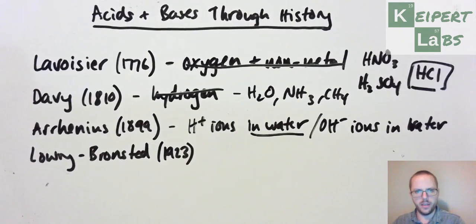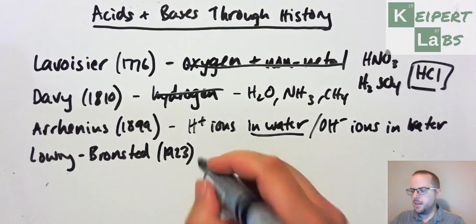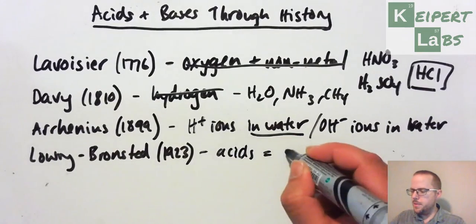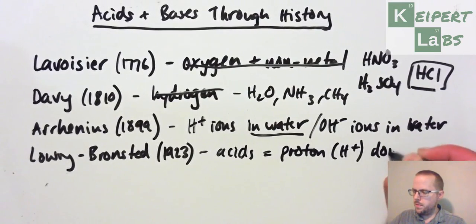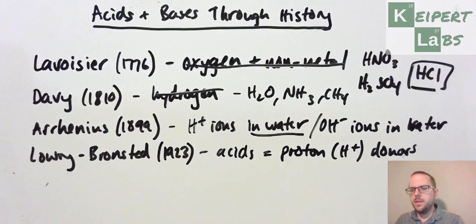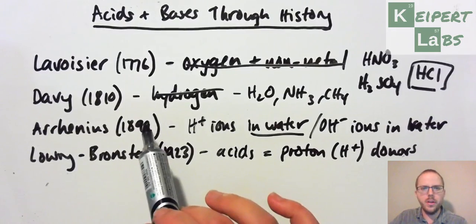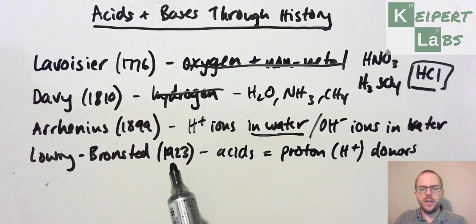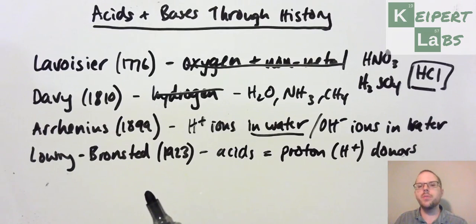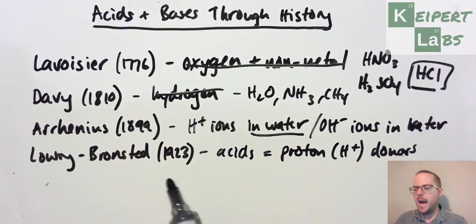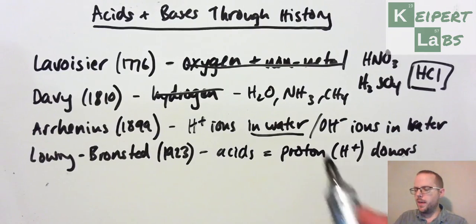Until then, Lowry and Bronsted, separately but concurrently, that is at the same time, developed this idea that acids are proton, that is H plus donors. So let's give a second historical context. Remember that Arrhenius was around about the time of the electron, but between him and 1923, we've got Rutherford, we have Bohr, we have quantum mechanics, we've got the discovery of the nucleus, the discovery of the proton, proposing electron shells and orbits and all of these sorts of ideas which were as yet unknown when Arrhenius was proposing his ideas.